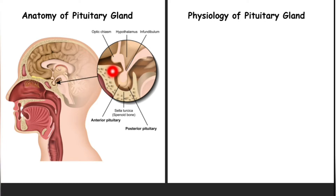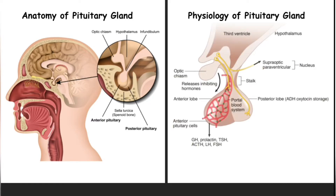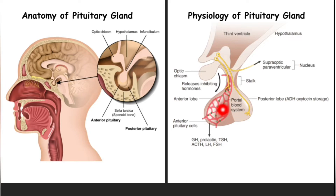It is covered on top by the diaphragm sellae, which is actually part of the dura mater. There are two parts: the anterior pituitary gland or adenohypophysis, and the posterior pituitary gland or neurohypophysis. The pituitary gland is connected to the hypothalamus via the stalk, which is very important.